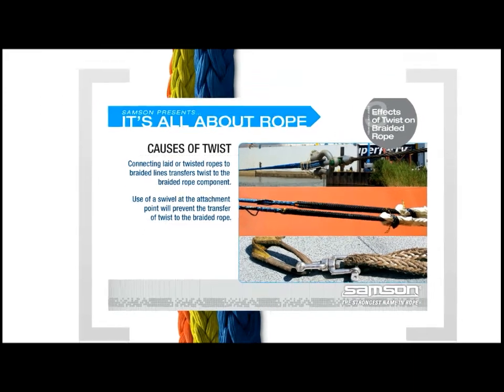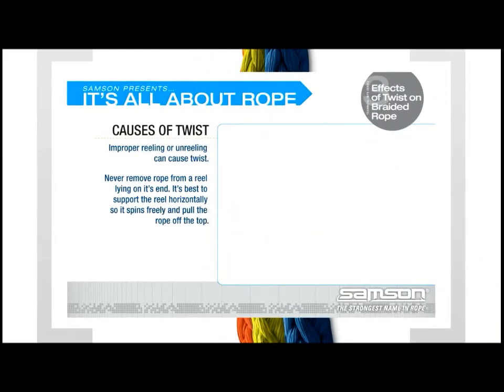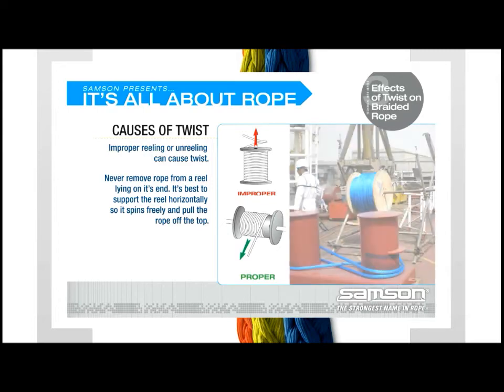Improper rope handling can also introduce twist into the line. Rope handlers should be trained in techniques for working with synthetic lines. Another mechanism that can introduce twist is improper reeling or unreeling. Rope should never be taken from a reel that is lying on its end. It is best to support the reel horizontally so it may spin freely and then pull the rope off the top.